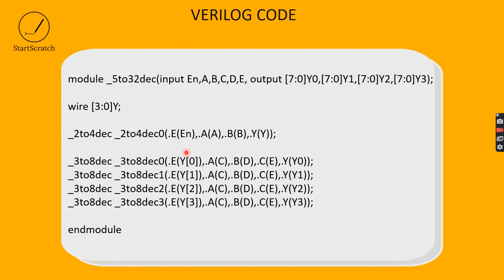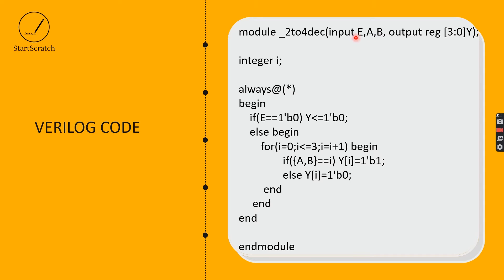If you don't know how to use instantiation by name, you can learn here. The format is: parent module name, then the child module instance name. The parent module name here is underscore_2to4_dec, and the child instance name is underscore_2to4_dec_0. Inside the brackets, you give the format: dot parent_module_port_name, and in parentheses the child module port name. For example, the child module port name is 'En' and the parent module port name is 'E', which is the enable pin.